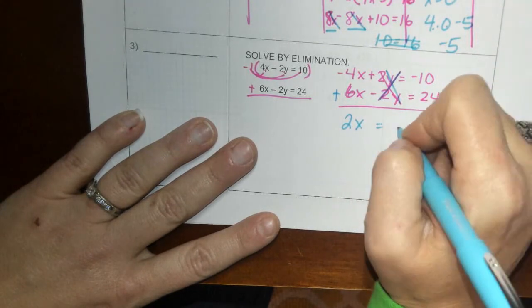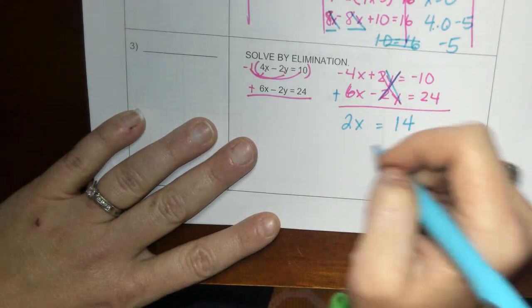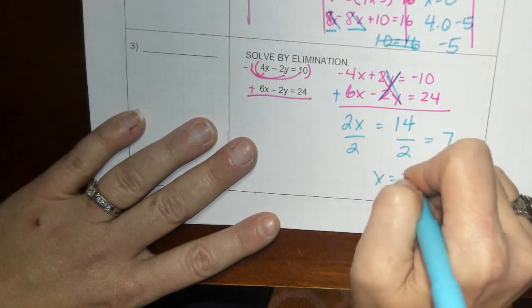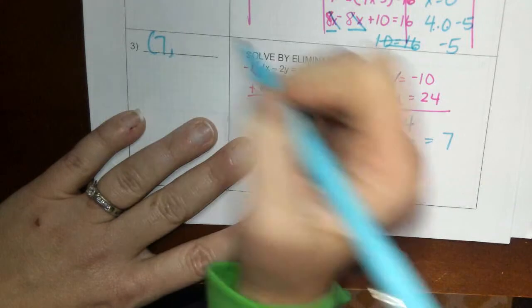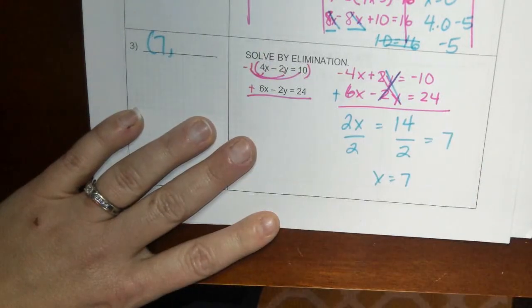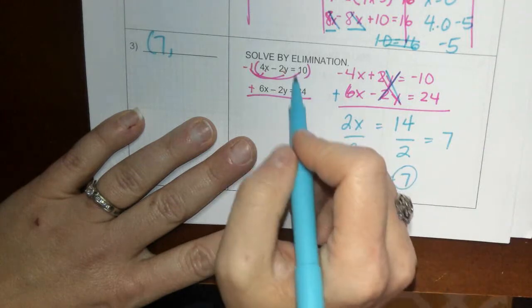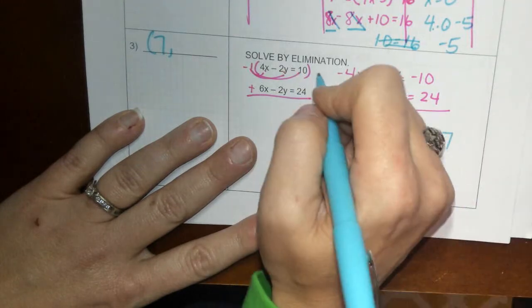All right, so now these cancel, that's what we want, and we add up the x's. That gives us 2x equals 14. Divide by 2 and you get 7, x equals 7. That's the first part of our answer.